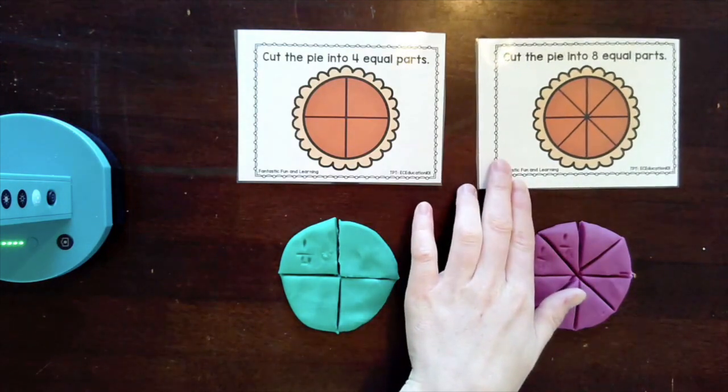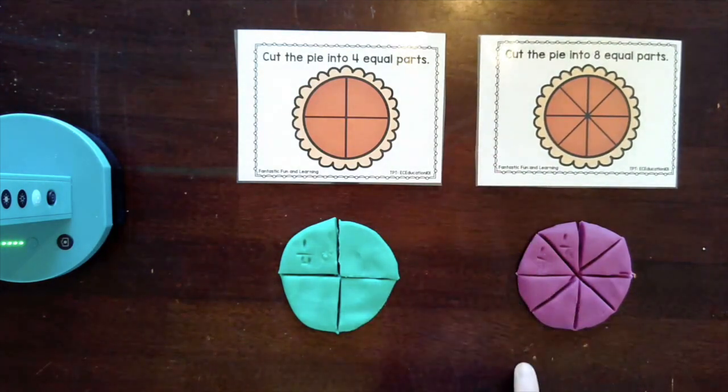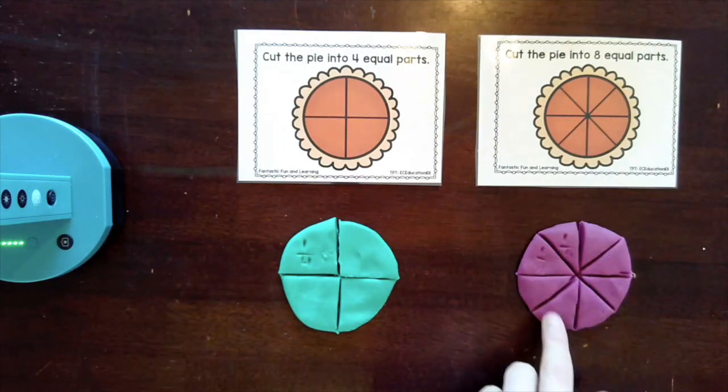Here I've cut my pie into eight equal parts. One, two, three, four, five, six, seven, eight.